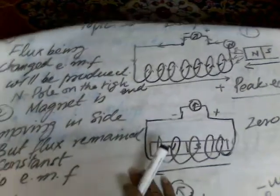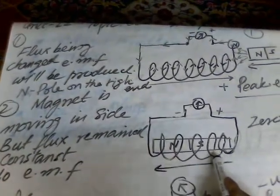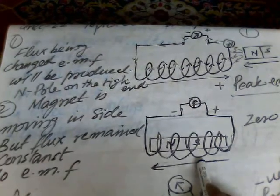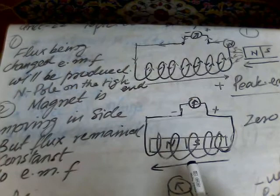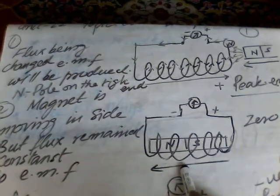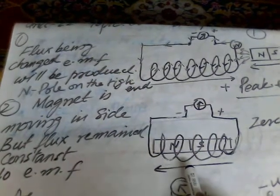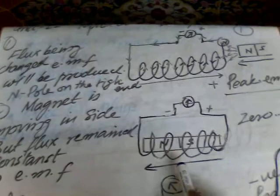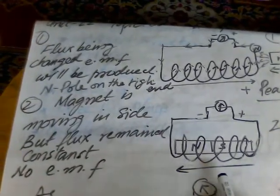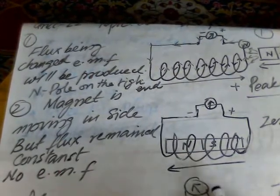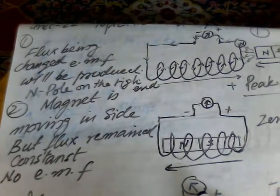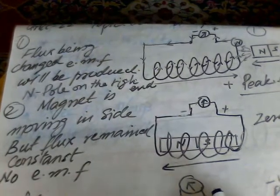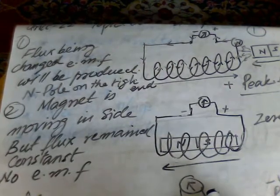In the second figure, while the magnet is inside and still inside the coil, the result will be a constant electromagnetic flux — no change in electromagnetic flux. Because of this, EMF will be zero. According to Lenz's law, unless the electromagnetic flux is being changed, EMF will not be produced. The only condition for EMF is that the electromagnetic flux must change. If no change, then zero EMF.